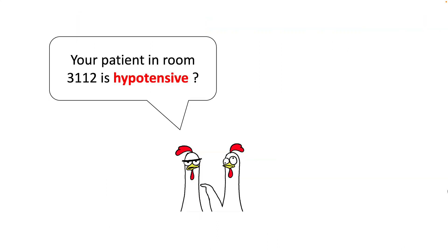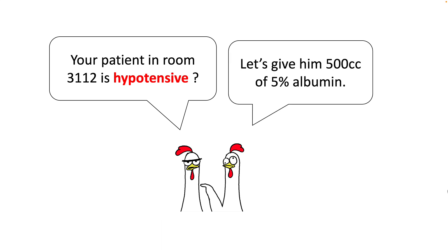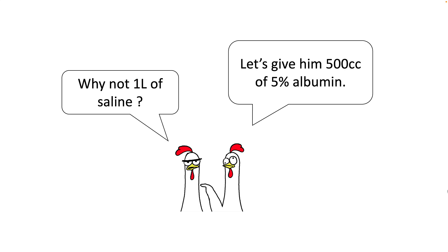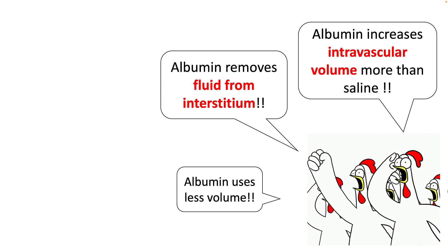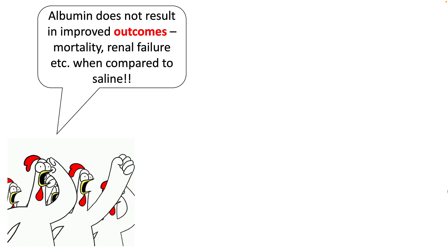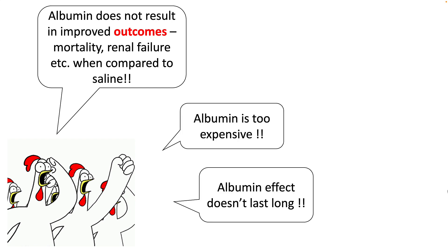Let's say you're called for a patient who was hypotensive and you ordered 500 cc of 5% albumin, and your attending asks you why not a liter of saline. You will hear many opinions about this. Proponents of albumin would tell you that albumin increases intravascular volume more than saline and removes fluid from the interstitium using less volume. While supporters of saline will tell you that albumin does not result in improved outcomes in terms of mortality and renal failure, it is too expensive, and its effects don't last long.